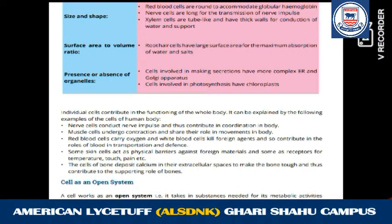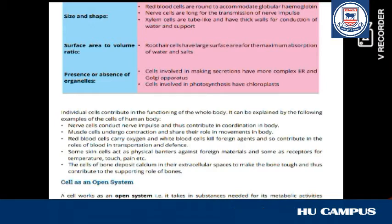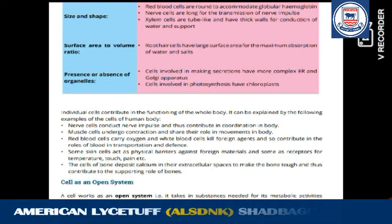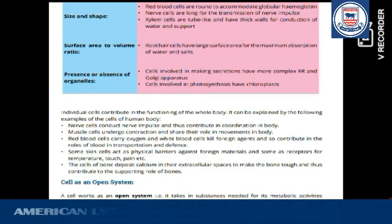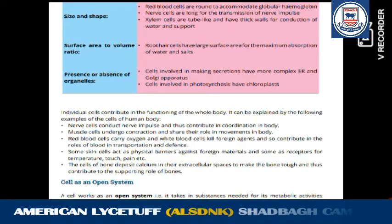Next is the presence and absence of organelles. Cells involved in making secretions have more complex ER and Golgi apparatus. There are cells whose job is secretions — such as the glands in our body. So such cells have complex ER and Golgi apparatus because their job is to make secretions. Next: cells involved in photosynthesis have chloroplasts. Chloroplast is an organelle not present in all cells — it is only present in cells whose role is photosynthesis.